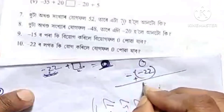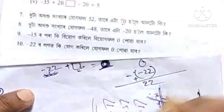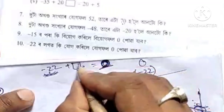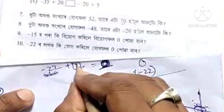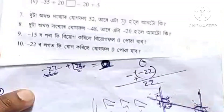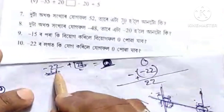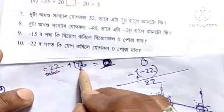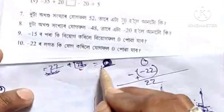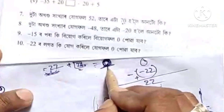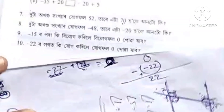So plus 22. UP 22 — minus 22 plus 22 is equal to 0. If you do that, the result is complete.